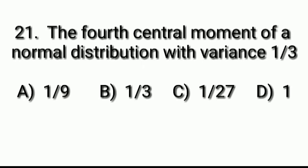Question number 21: The fourth central moment of a normal distribution with variance 1/3 — formula: 4th central moment = 3σ⁴. With variance 1/3: 3 × (1/3)² = 1/3. Answer: Option B, 1/3.